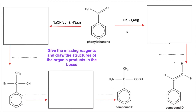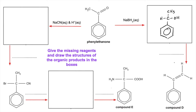To start with, I'm going to go in a clockwise direction and do this shorter route. Phenylethanone with NaBH4 aqueous — that's a reducing agent, so it's going to reduce this ketone, phenylethanone, to a secondary alcohol.